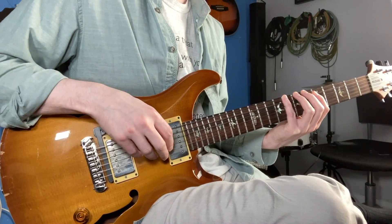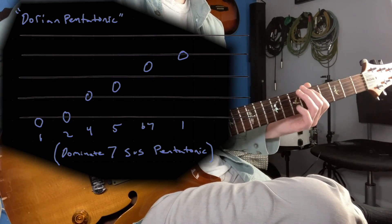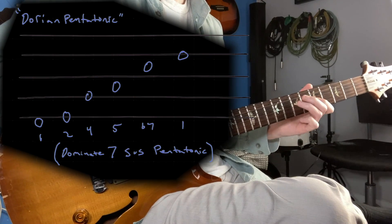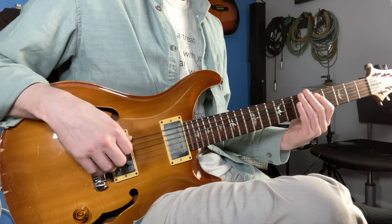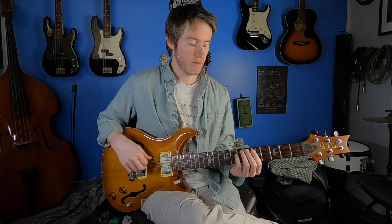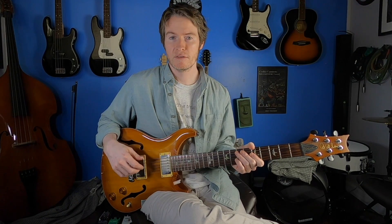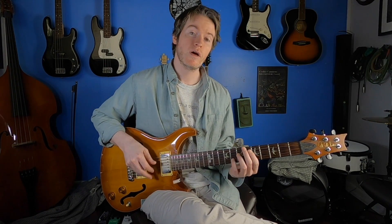Because D is the 2nd degree of C, we could call this D Dorian pentatonic. But if we're going to name it based on how to use it, I would call it D dominant 7 sus pentatonic. The reason — similar to the G sus pentatonic, it doesn't have a 3rd. However, it has a 2nd and it has a 4th, so it lends itself to suspended chords. This one also has the flat 7 though. So it works really well and sounds pretty awesome against dominant 7 sus chords.